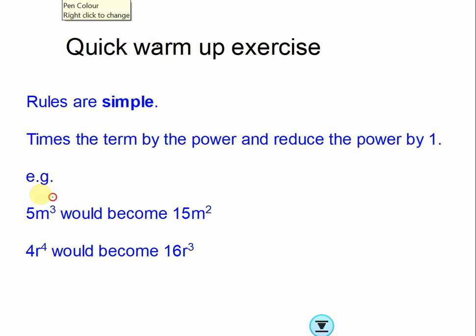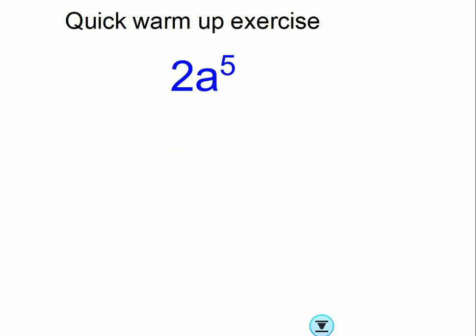So for example, can we see here 5m cubed? Times by the power, so 5 times 3, well that's 15, and reduce the power by 1, so 3 becomes 2. Times by the power, so 4 times 4 is 16, reduce the power by 1, 4 becomes 3. Easy peasy, right?